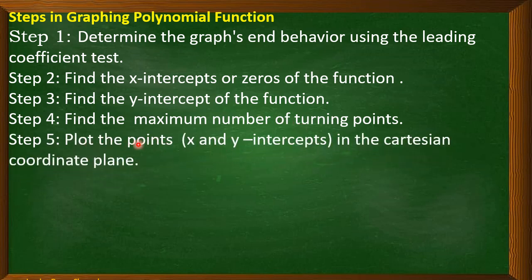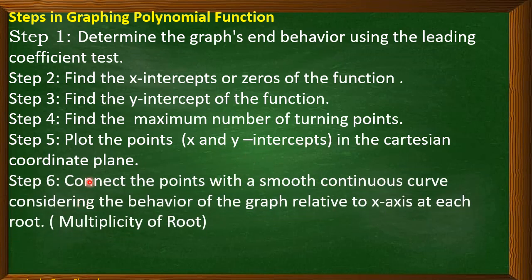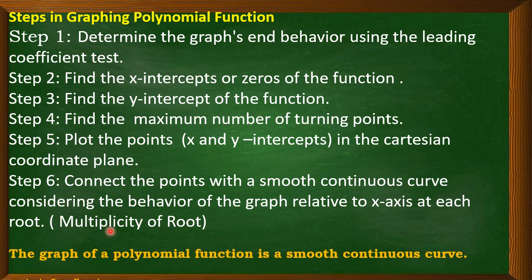Fifth: plot the points — the x and y-intercepts — in the Cartesian coordinate plane. And last: connect the points with a smooth continuous curve, considering the behavior of the graph relative to the x-axis at each root, or the multiplicity of the root. Always remember that the graph of a polynomial function is always a smooth continuous curve.